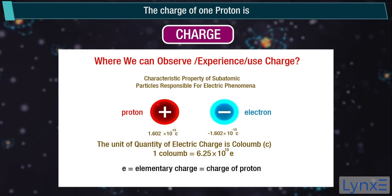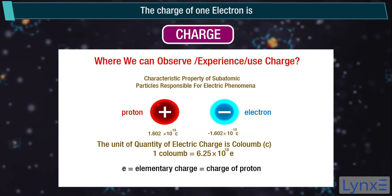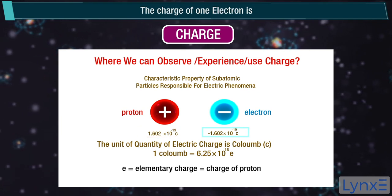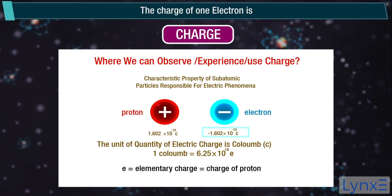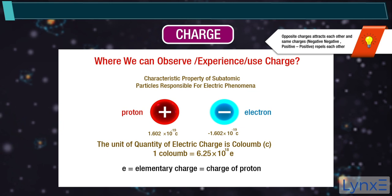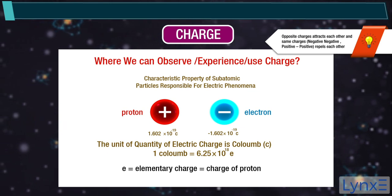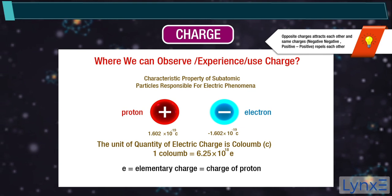Charge of 1 proton is 1.602 into 10 raised to minus 19 coulomb, and charge of 1 electron is minus 1.602 into 10 raised to minus 19 coulomb. Note. Opposite charges attract each other and same charges, negative negative, positive positive, repel each other.